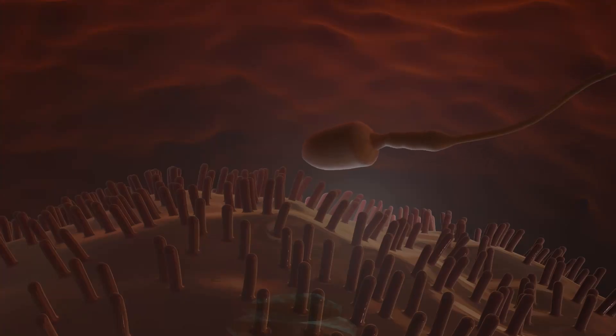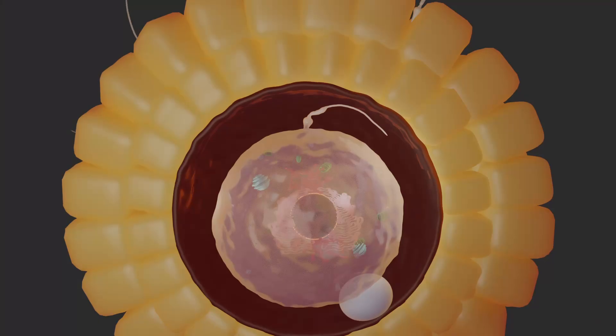After binding to the egg cell, the two germ cells fuse, and the cell nucleus of the sperm, which contains the genetic material, penetrates the egg cell. The cortical reaction also begins.